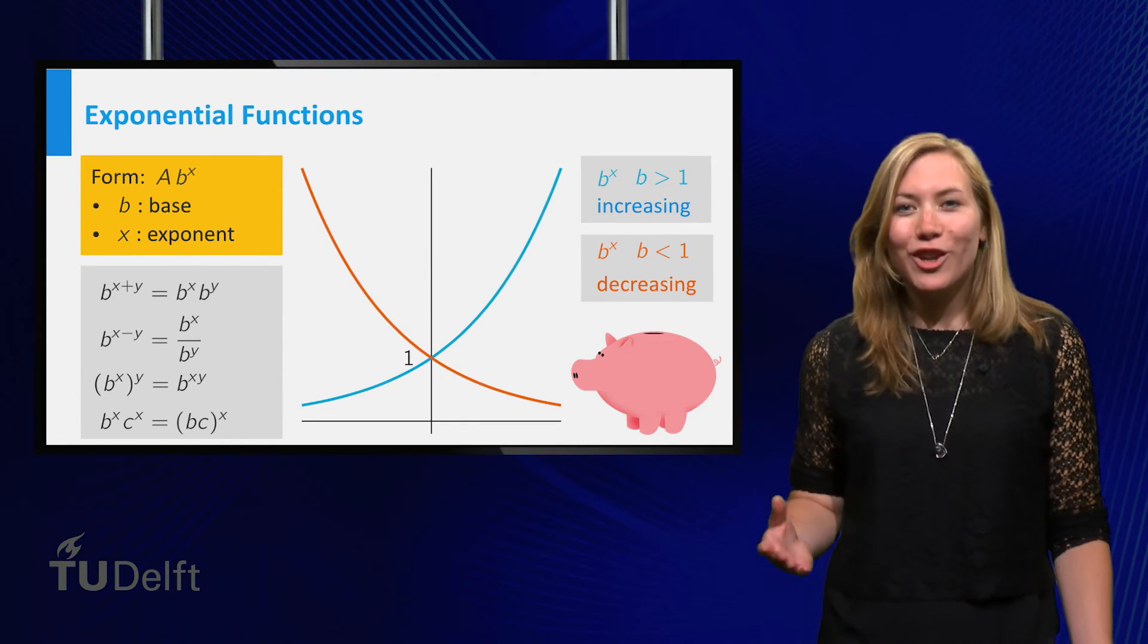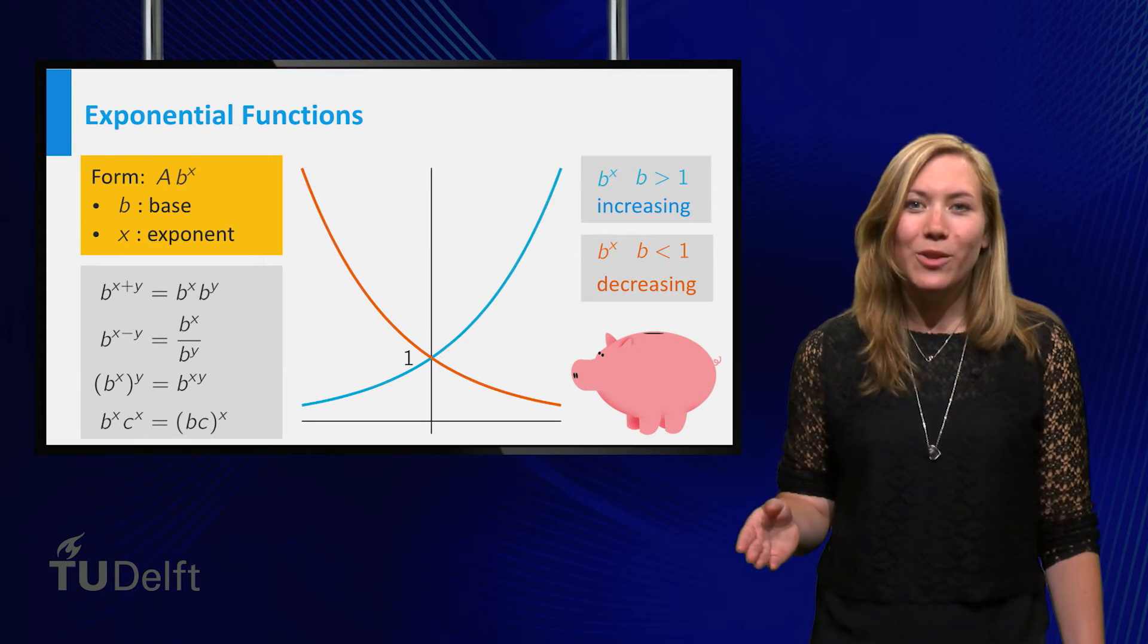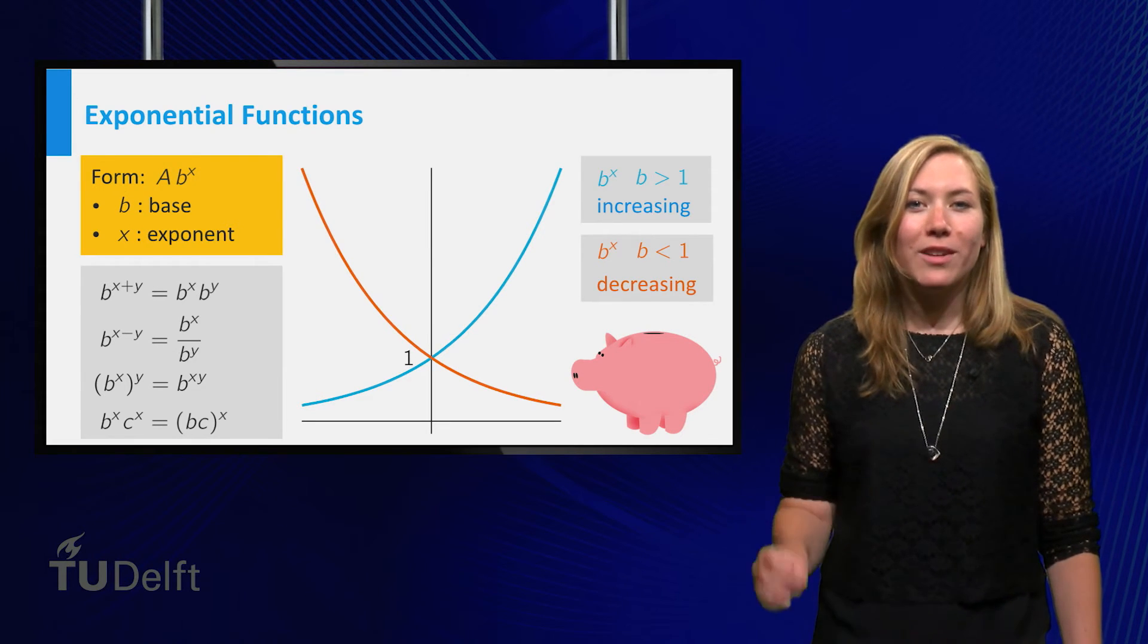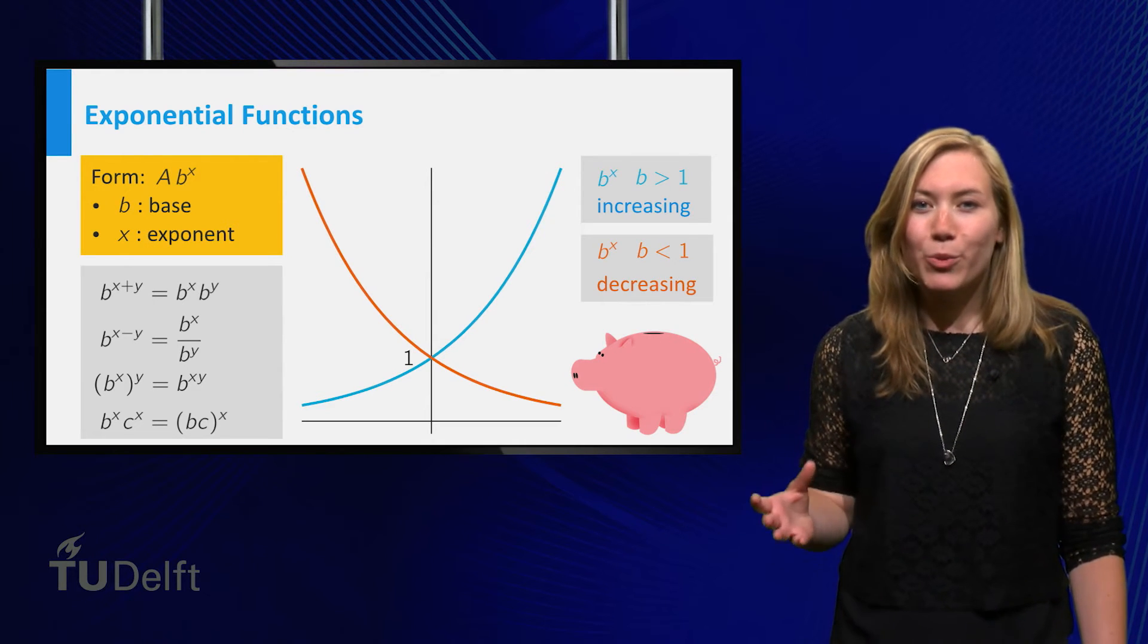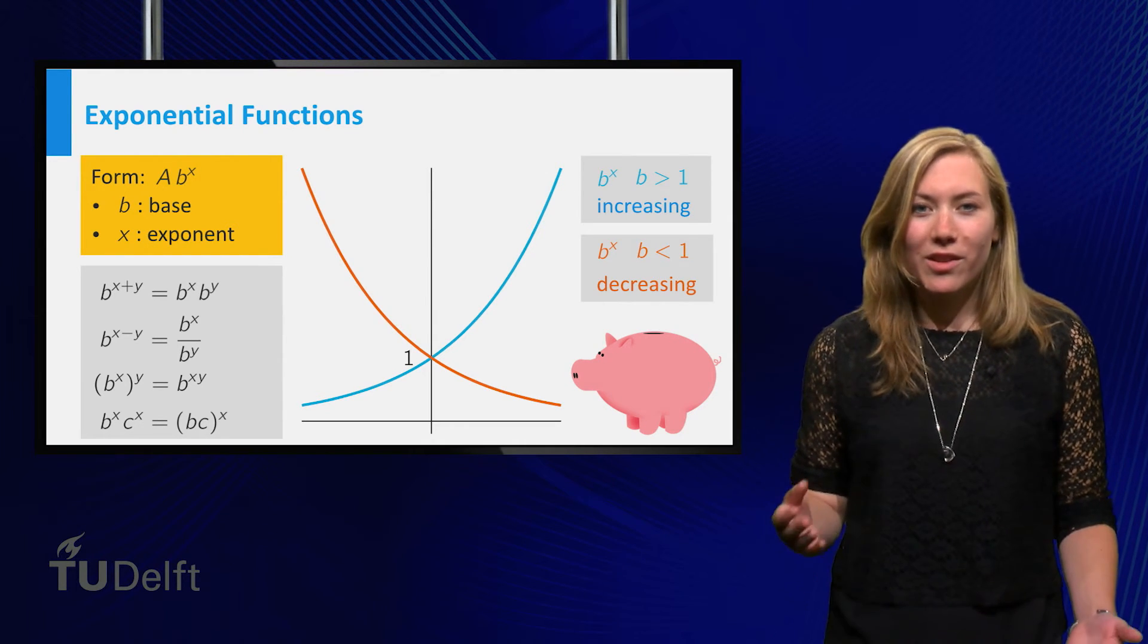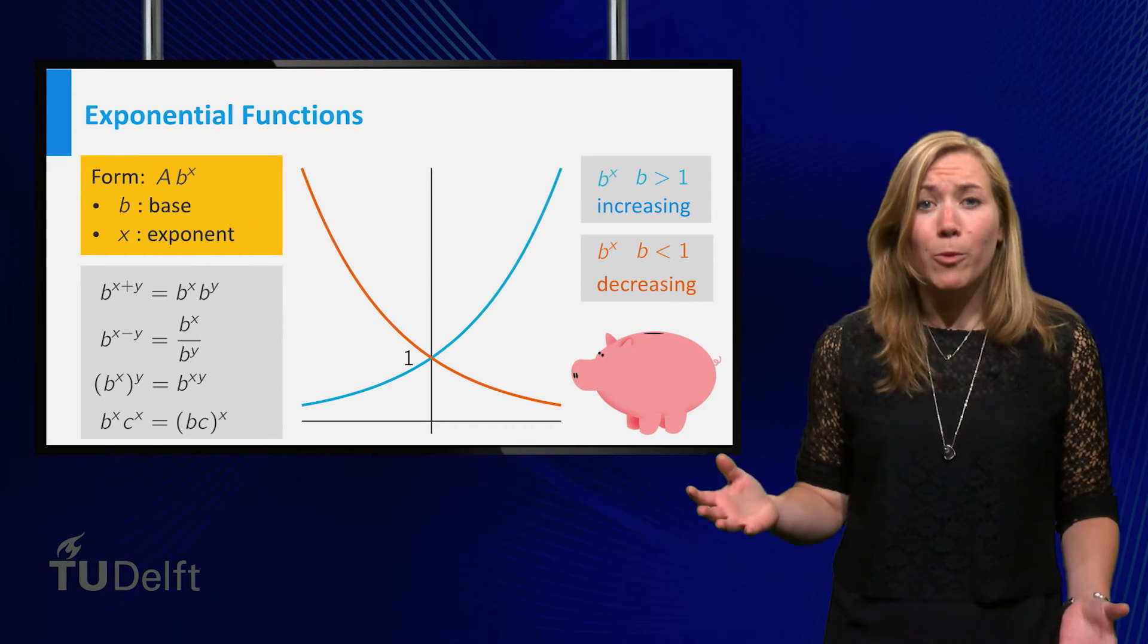Moreover, for b larger than 1, the function b to the power x grows faster than any polynomial function, which is why exponential growth is sometimes used as a synonym for very quick growth.